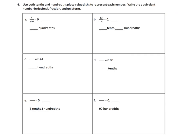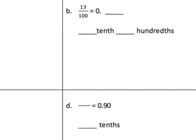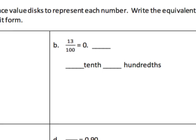On the last page we have a variety of different representations — fractions, decimals, and unit form. Sometimes they give us the fraction and we write the decimal and unit form; sometimes they give us the decimal and we find the other two; sometimes the unit form. For problem B, thirteen hundredths: as a decimal that's zero point one three, which is one tenth and three hundredths.